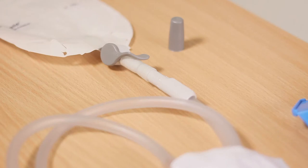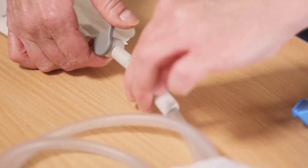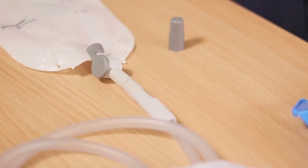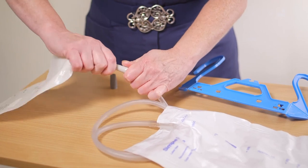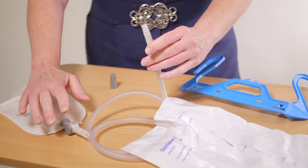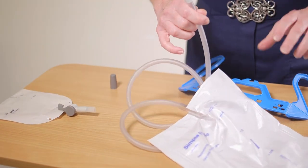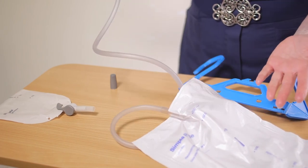In the morning turn off the tap at the bottom of the leg bag. Disconnect the night bag and empty the urine into the toilet from the night bag.